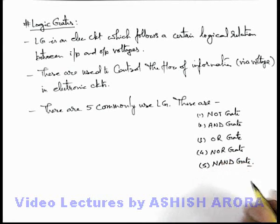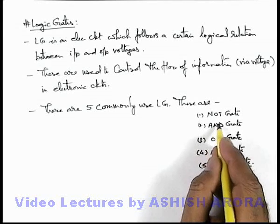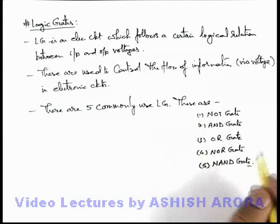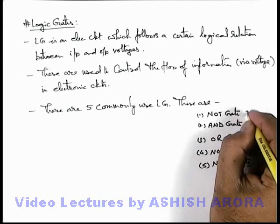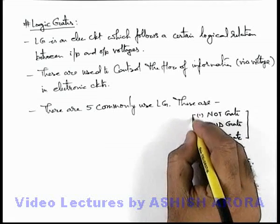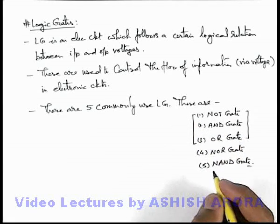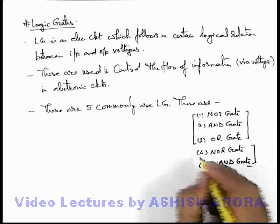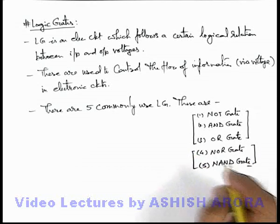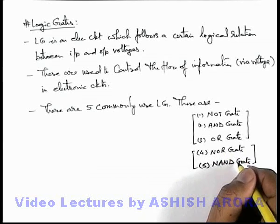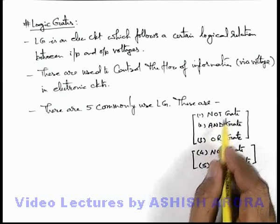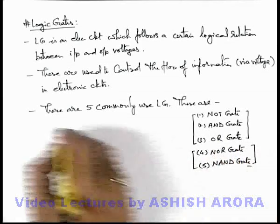These are the basic gates which are used in different kinds of electronic circuits. By combining these gates, various circuits are obtained. Out of these, NOT, AND, and OR are the most common gates used in fundamental circuits, while NOR gate and NAND gate are fundamental or universal gates. They are called universal gates because using NOR gate and NAND gate we can also generate NOT, AND, and OR gates.